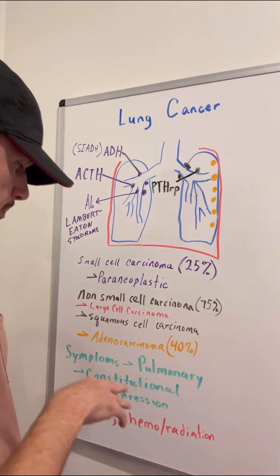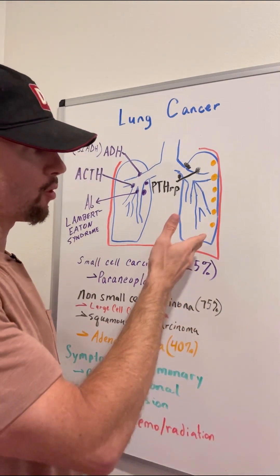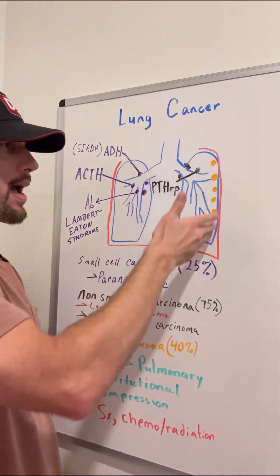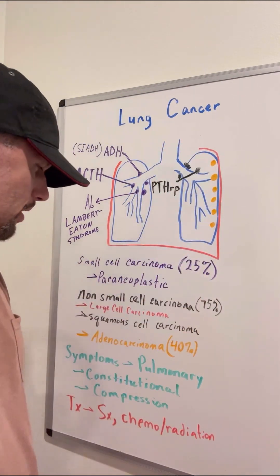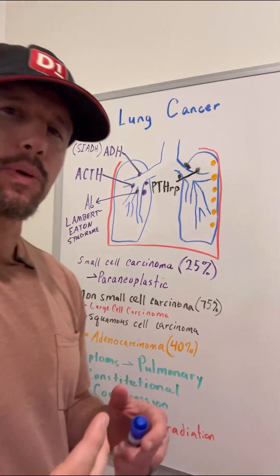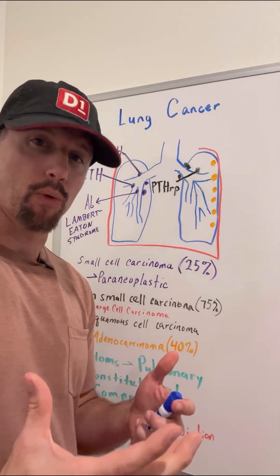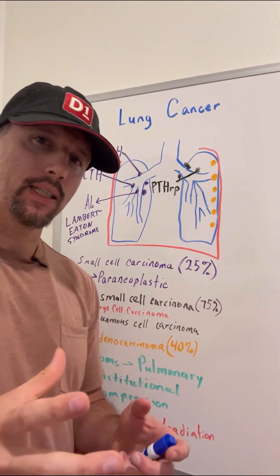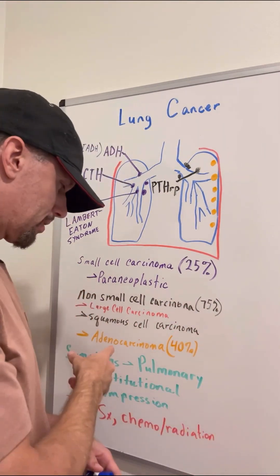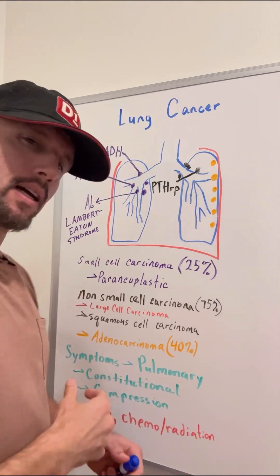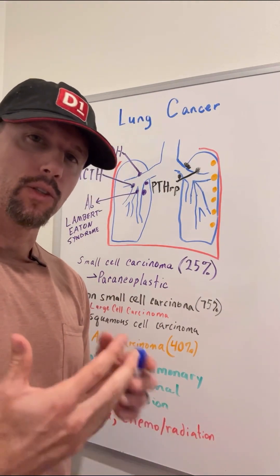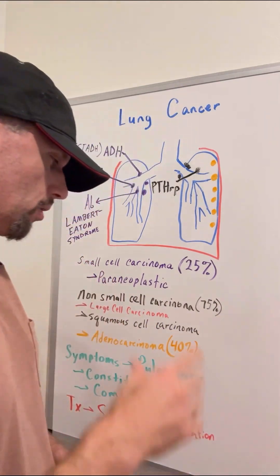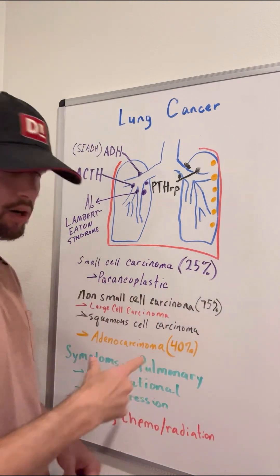Adenocarcinoma is unique because it appears more on the periphery of the lung, so on an X-ray or CT you'll see it on the outside. While about 80 to 90 percent of lung cancers are associated with smoking, adenocarcinoma is the one most likely to occur in nonsmokers — about one third of these patients are nonsmokers. So associate nonsmoking lung cancer with adenocarcinoma.